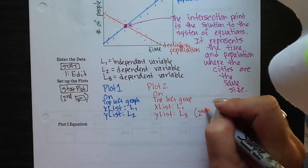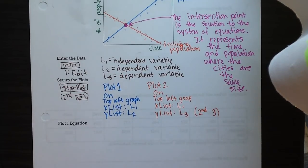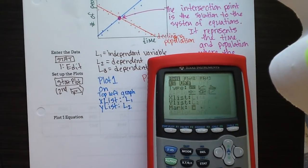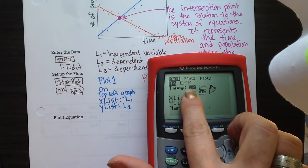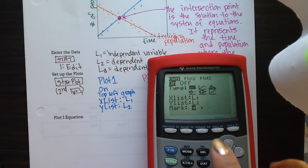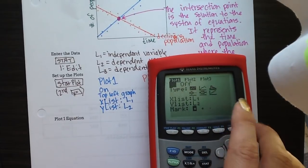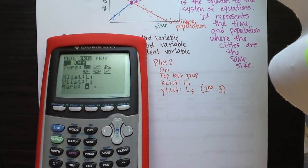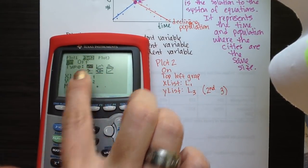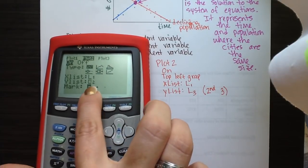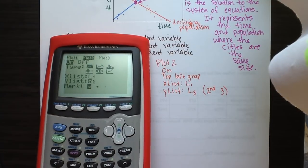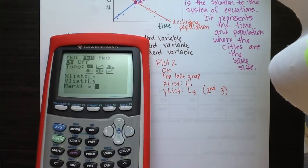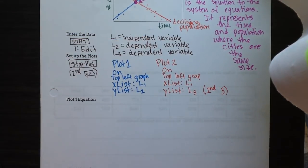To access L3, push the second button and then the number three on the keypad. I'll show you: go into plot one, turn it to On, choose the top left graph, x list is L1, y list is L2. Then go to plot two, turn it On, choose the top left graph, x list is L1, y list is L3 by pressing second then number three. You can also change your mark to a different type so you can tell your two scatter plots apart when looking at the graph.